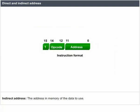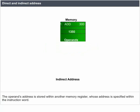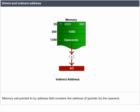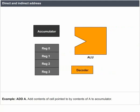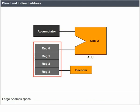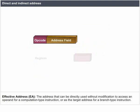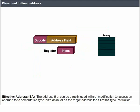Indirect address: the operand's address is stored within another memory register whose address is specified within the instruction word. The memory cell pointed to by the address field contains the address of (pointer to) the operand. Example: 'Add A' means add the contents of the cell pointed to by the contents of A to the accumulator. This provides a large address space. The effective address is the address that can be directly used without modification to access an operand for a computation-type instruction, or as the target address for a branch-type instruction.